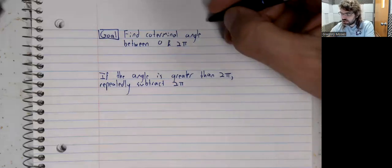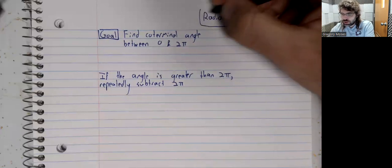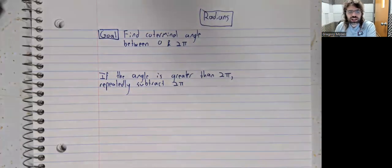And instead of adding or subtracting 360, if we're working with radians, we'll be adding and subtracting 2 pi.